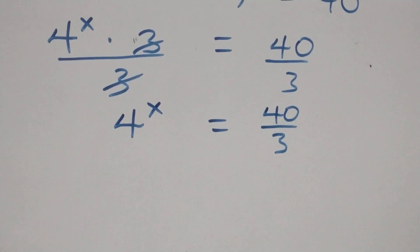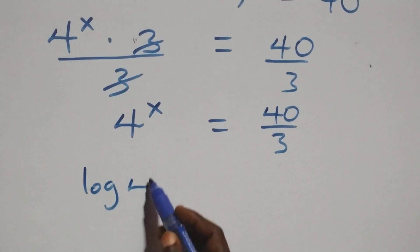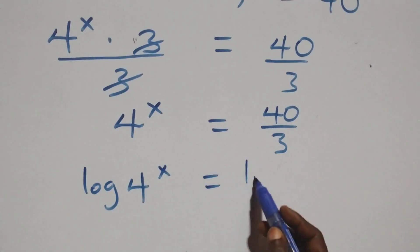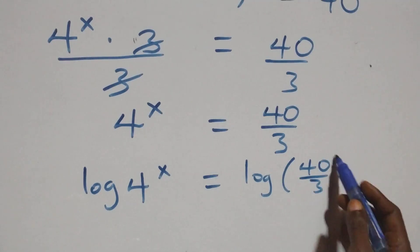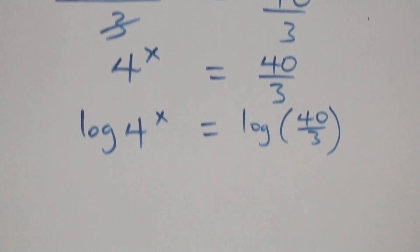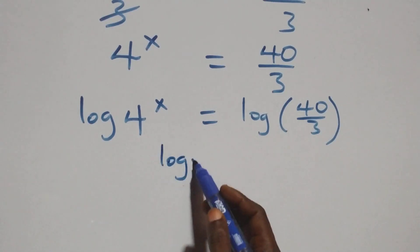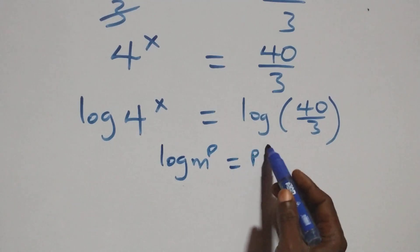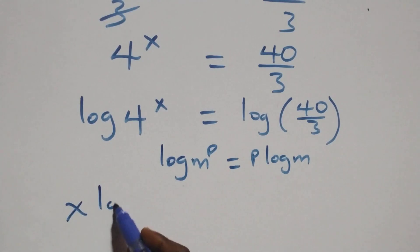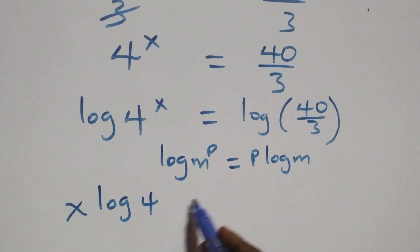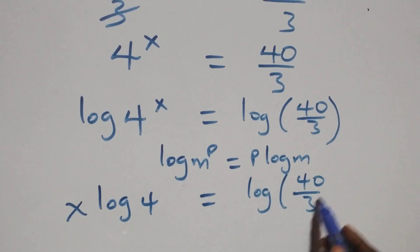The next step here, we take the log on both sides, giving us log of 4 raised to power x equals log of 40 over 3. We then apply the power law of logarithm: log m raised to power p is the same as p times log m. So this becomes x times log 4 equals log of 40 over 3.